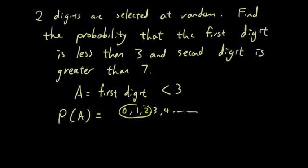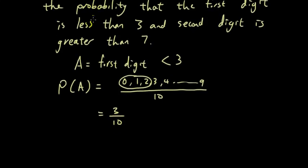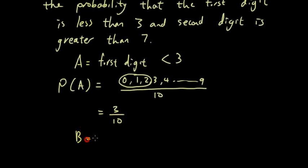Well, that's only 0, 1, and 2. Alright, so out of 10 numbers, there's only 3 numbers. So the probability is 3 numbers out of 10. So the probability is 3 out of 10. And then event B is second digit greater than 7.